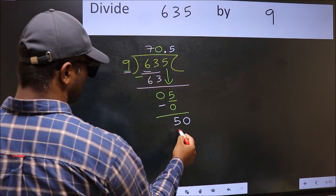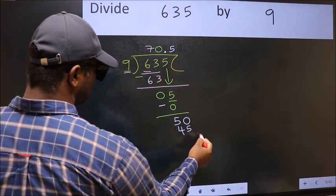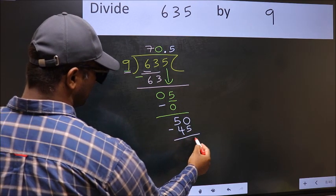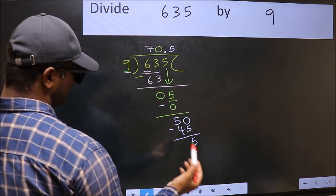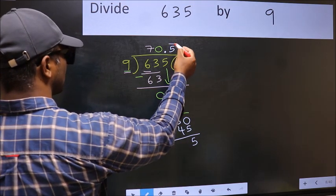Now subtract. We get 5. We got 5 again, which means we get a repeating bar on this number.